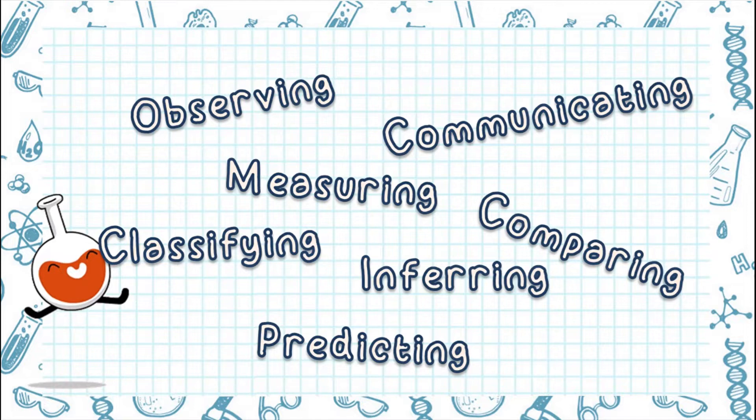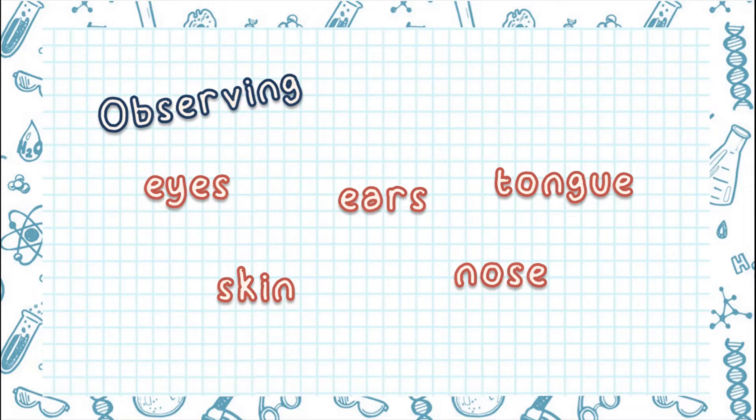So let's talk about them one by one. Observing means finding more information about something. When you observe something, you use your sense organs.